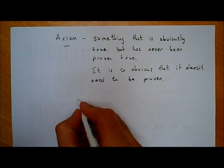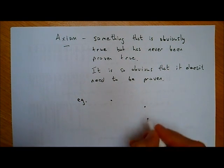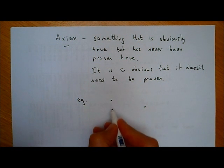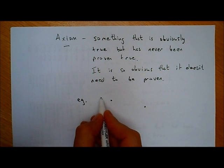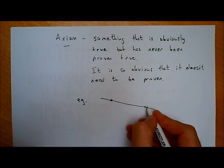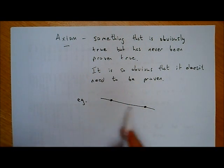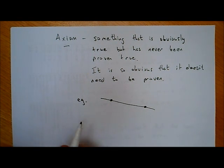One example of an axiom would be: say if I have two points, one point here and one point here, and I draw a straight line between those two points. An example of an axiom would be that there is only one straight line that I can draw between those two points. Here is the straight line — straight-ish anyway. I could keep trying, but there's no other straight line I could draw between those two points. It's so obvious that it's never been proven, and that's called an axiom.